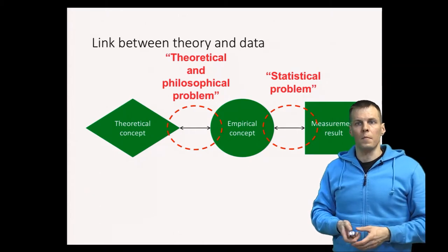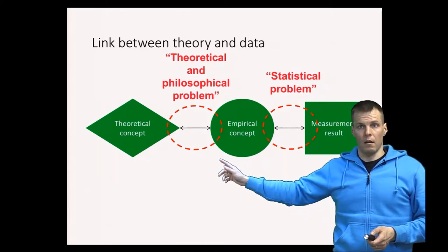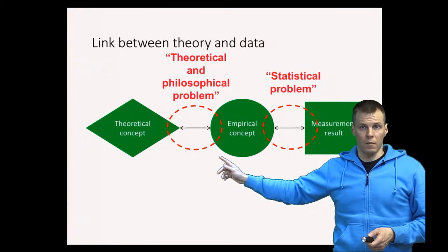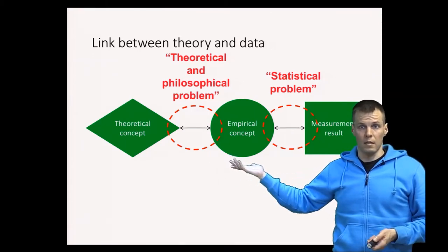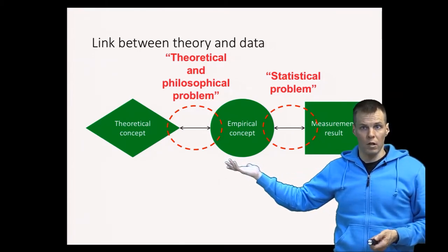So reliability is a statistical problem, and validity is a theoretical and philosophical problem. It relates to: is this relevant for the readers of your audience and your theory?